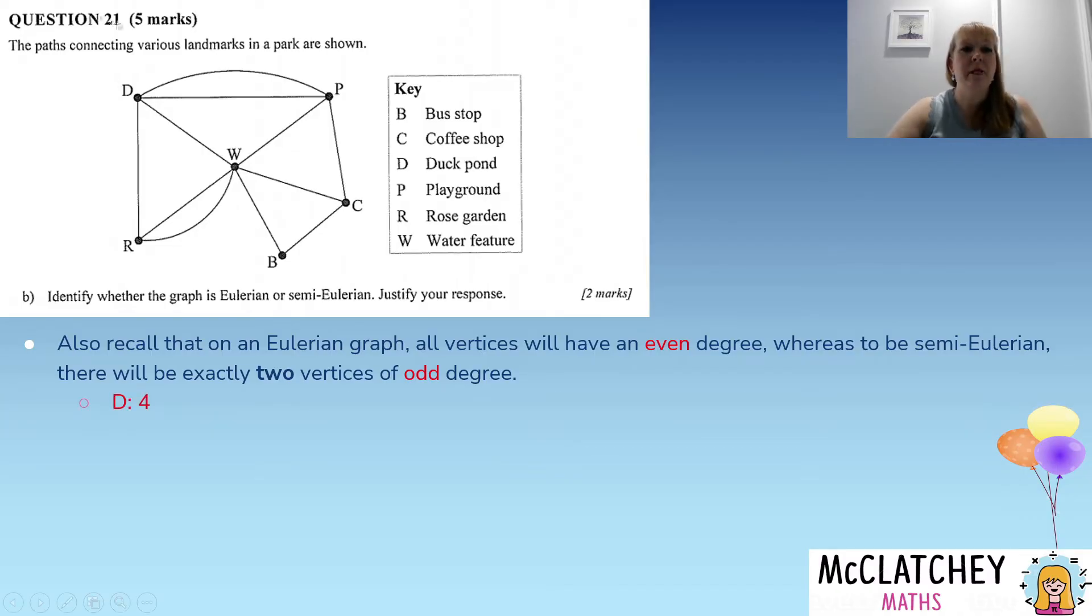So firstly, if we look at D, and I'm just going to bring my mouse up to D, we've got one, two, three, four paths coming out, so it has a degree of four. R has one, two, three paths coming out of that vertex, so it's got a degree of three. W has a lot more, it's got six: one, two, three, four, five, and six. We've got B with two coming out of it. C: one, two, three coming out of it. And P: one, two, three, four pathways coming out of that vertex.